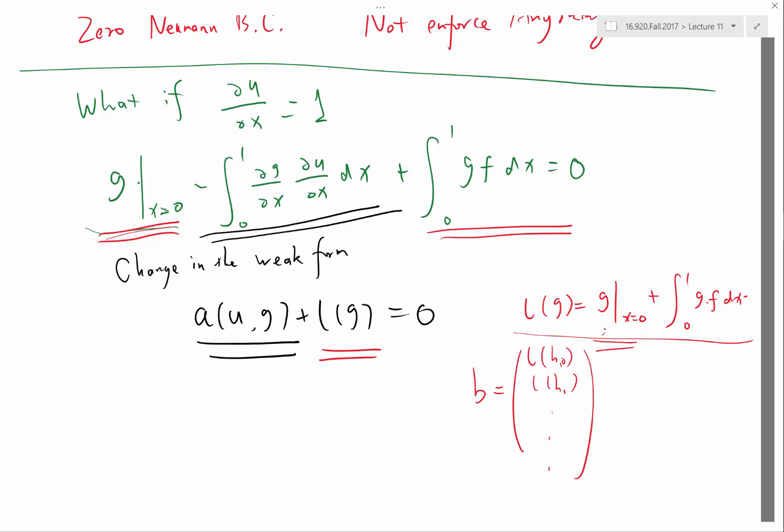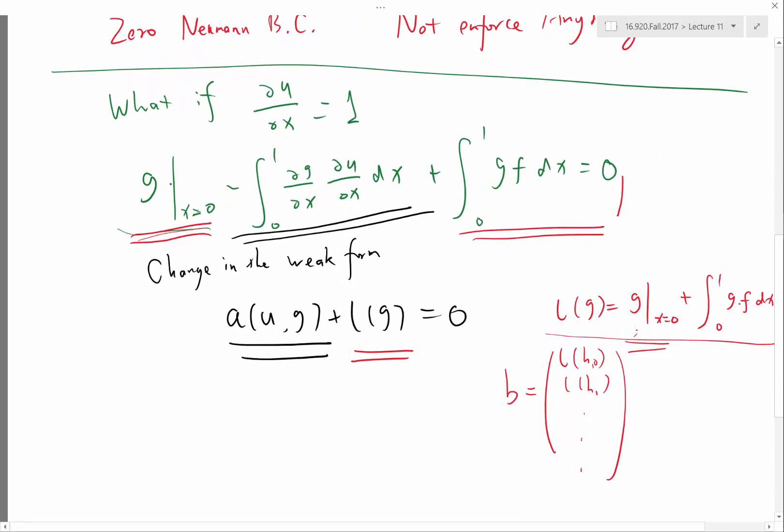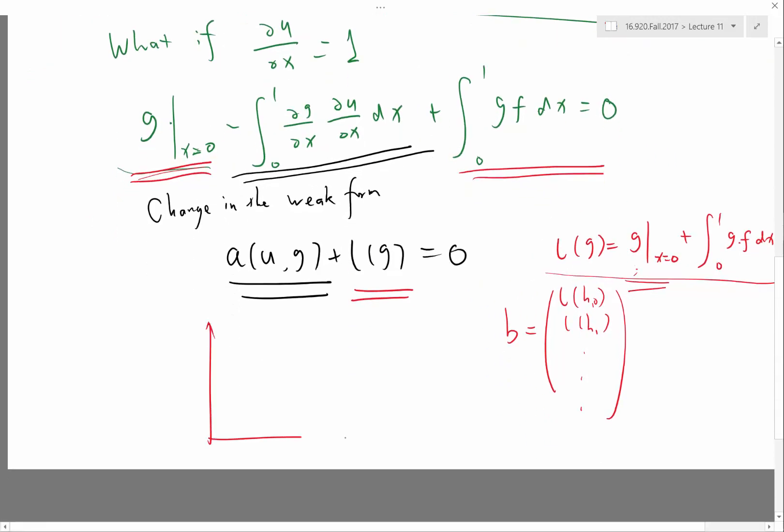for different, if we substitute G into one of these basis functions which term actually change in the right-hand side? Only the first one changes right? Because only the first basis function, only the first basis function